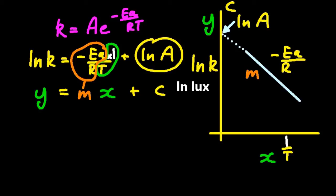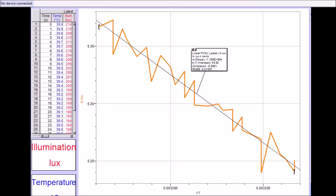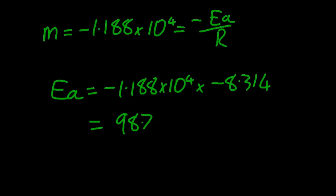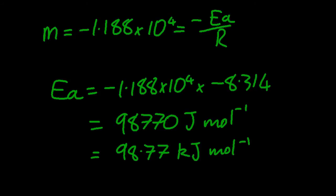I'm going to use this third set of data that I got to work out the activation energy for the glow stick. So the gradient off of that logger pro printout is that. So my activation energy in joules per mole is 98,770 convert to kilojoules per mole. And there we go that's the activation energy.